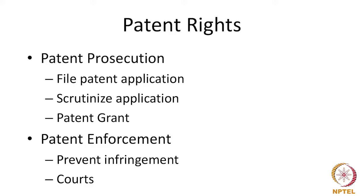Once the patent is granted, the enforcement of a patent refers to steps taken by the patent holder to ensure that the right in the patent is not violated by others — which is what we refer to as infringement. The enforcement part happens before the courts. The task of the intellectual property office is to scrutinize the patent application and grant a patent, whereas the courts or judicial system is entrusted with enforcing them. If there is an infringement, the patent holder will have to file an infringement suit before the courts.